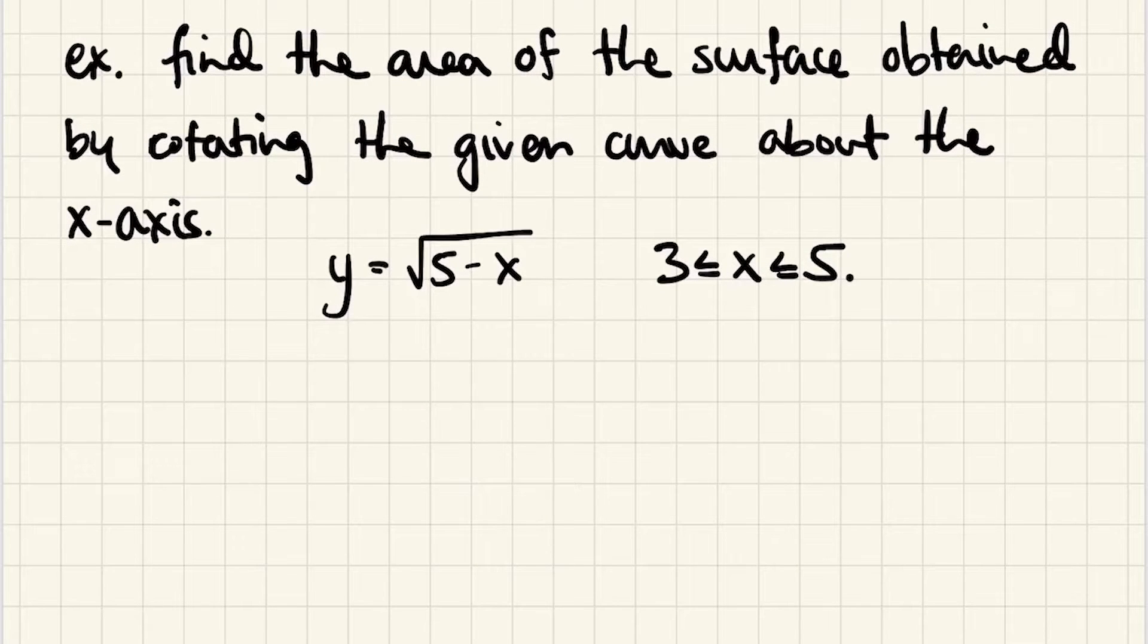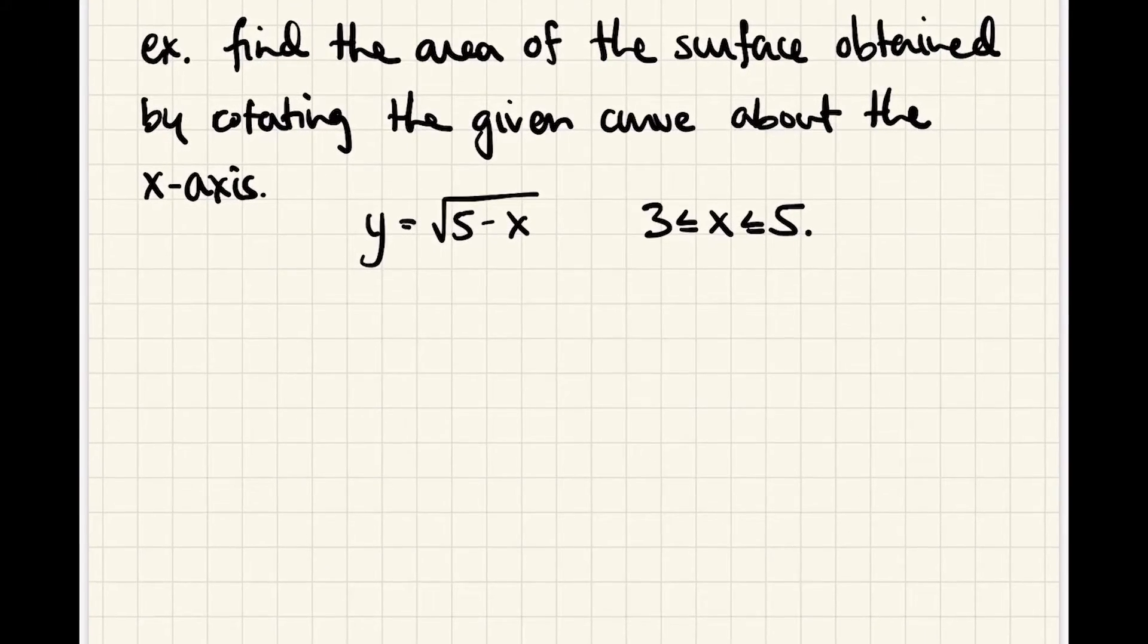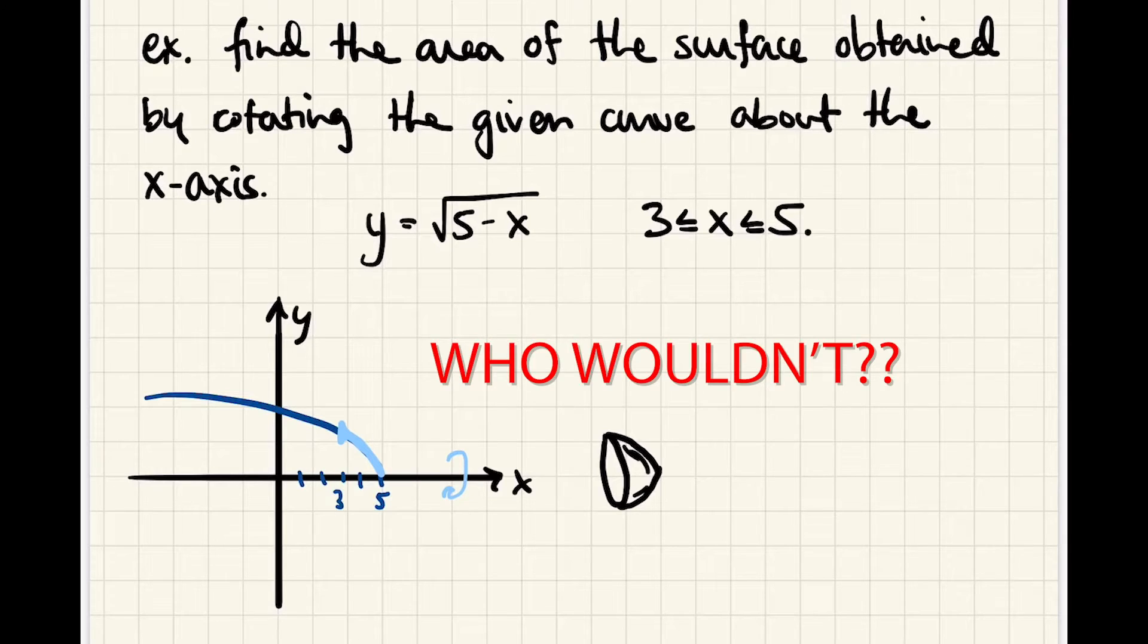So here we have a surface area problem. We're going to rotate this curve about the x-axis. It's not strictly required to graph these, but let's see what it looks like. So y equals rad 5 minus x. That's a parabola like this. So 3 to 5 would be this little region right here. And we're going around the x-axis. So that creates a little kind of paraboloid here, and we want to know the surface area of that paraboloid.